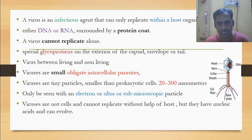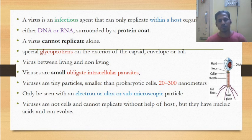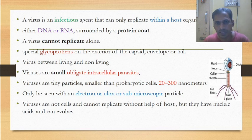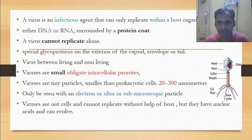The size of a virus might be 20 to 300 nanometers. Viruses can only be seen with the help of an ultra-microscope or electron microscope — they are simply called sub-microscopic particles.